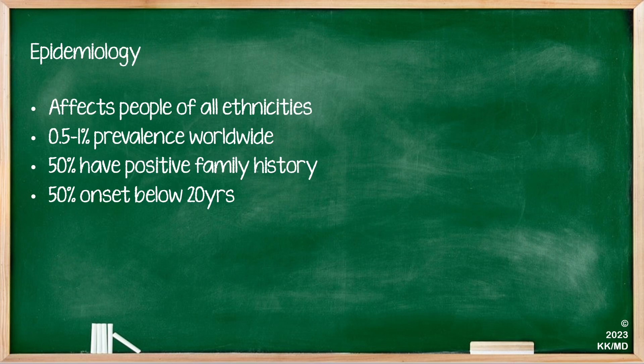As for its epidemiology, it can affect people of all ethnicities and the prevalence is about 0.5 to 1% globally. 50% of patients have a positive family history and 50% of patients start having vitiligo symptoms below the age of 20.